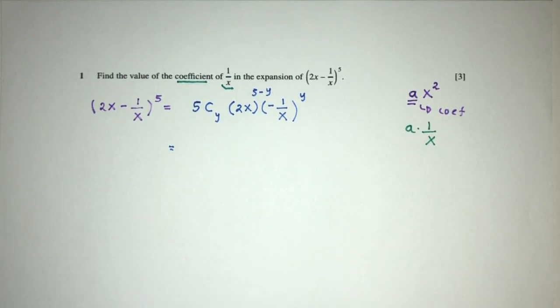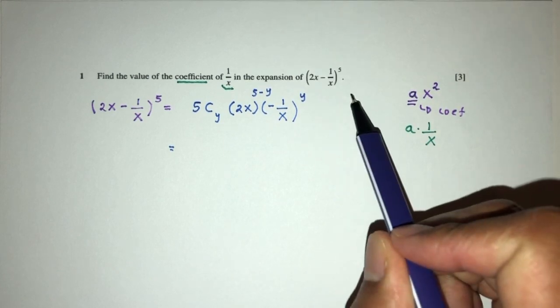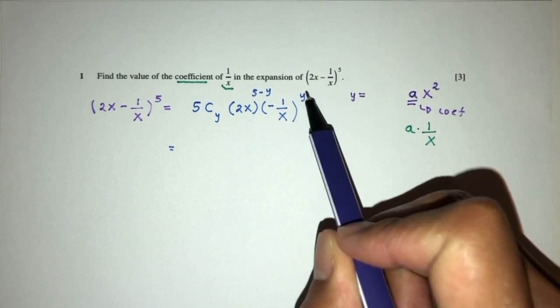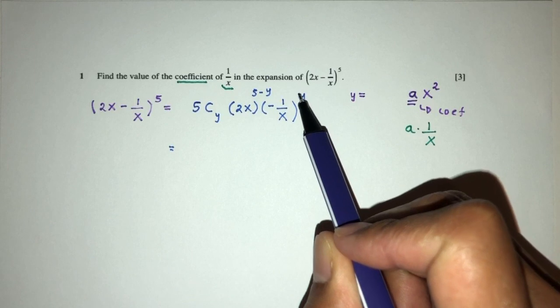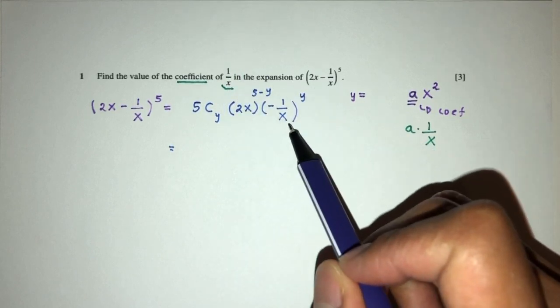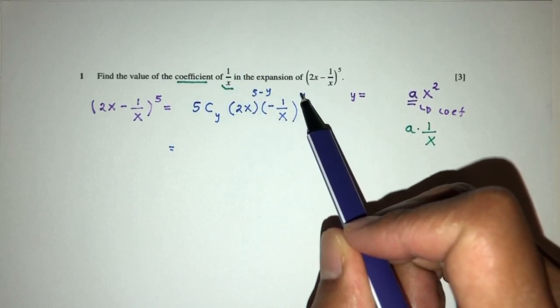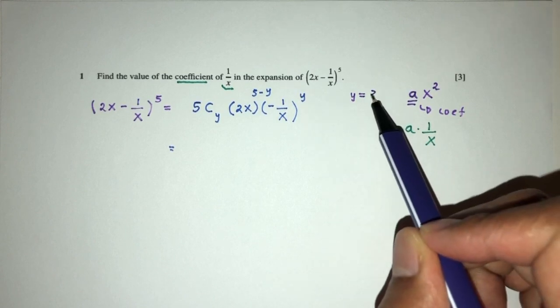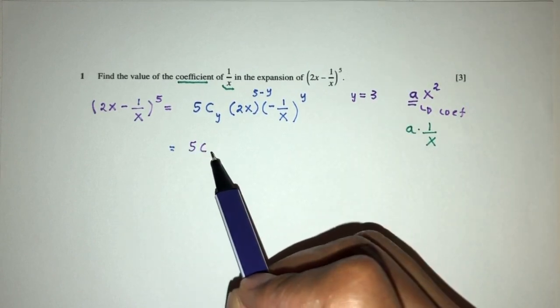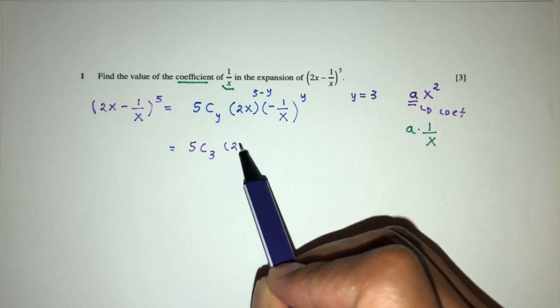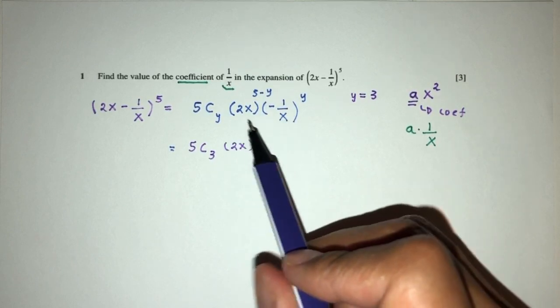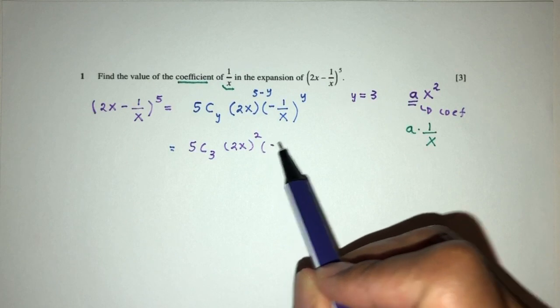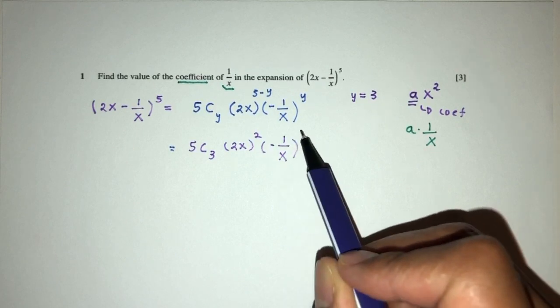Let's do this by trial and error. We don't know exactly which one is going to be, so we can observe and see which one we have to choose. Here we need 1 over x, so we need this to be remaining 1. Let's choose y to be 3. So you will have 5 choose 3, that will be 2x, 5 minus 3 is 2, and then minus 1 over x, that will be 3.